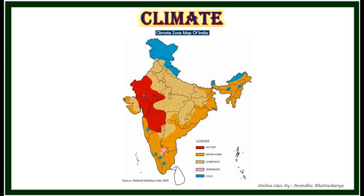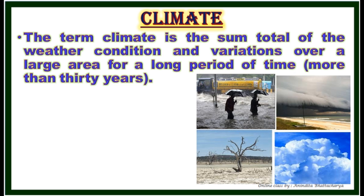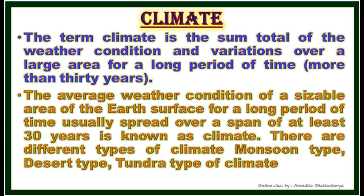The term climate is the sum total of weather conditions and variation over a large area for a long period of time — more than 30 years. In other words, the average weather condition of a sizable area of the earth's surface for a long period of time, usually spread over a span of at least 30 years, is known as climate.